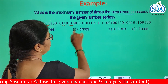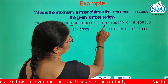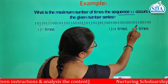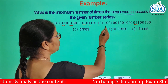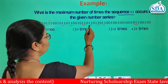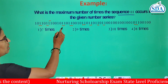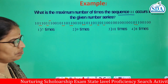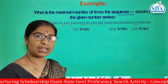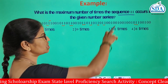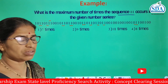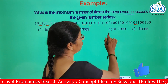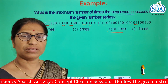Then continuing through the series — one, two, three, four, five, six, seven, eight, nine, ten — there are ten times that such a sequence or pattern occurs. That matches option number three.